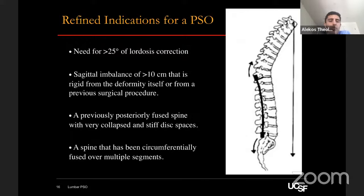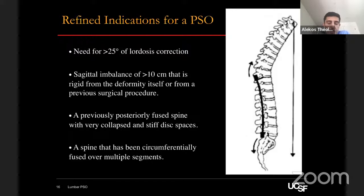These are the refined indications, with some nuances: deformity with considerable global sagittal imbalance greater than 10 cm secondary to a rigid deformity; regional deformity in the lumbar spine with lumbopelvic mismatch needing greater than 25 degrees of lordosis correction; prior posterior-based surgery with stiff and collapsed disc spaces where correction through the disc space alone isn't achievable; and circumferential fusions with a concomitant lumbar deformity.